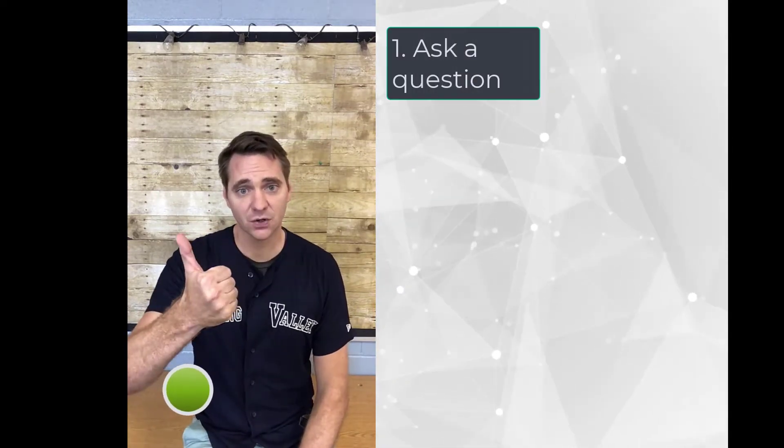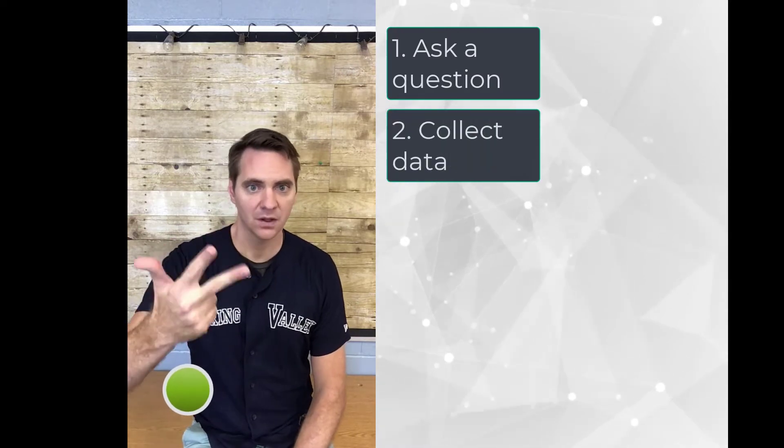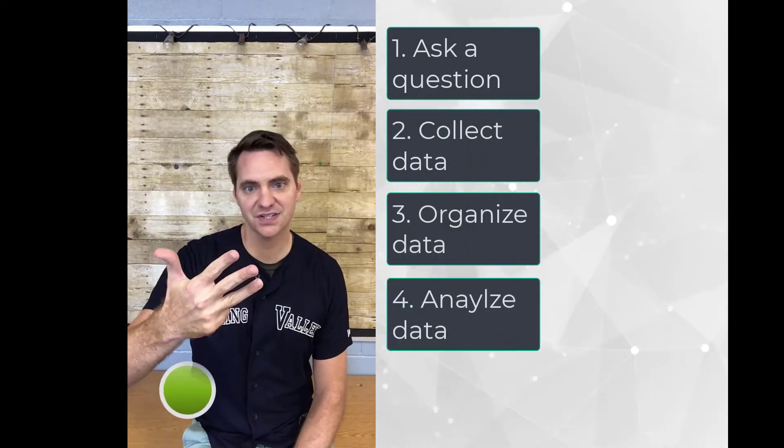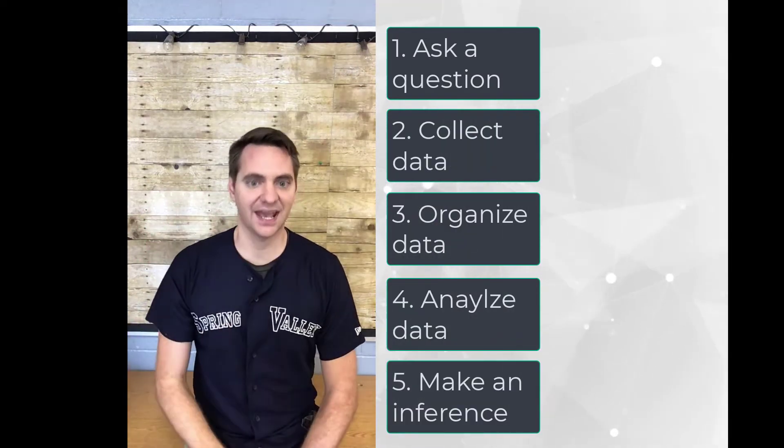All right, well, that was really wordy and dense. So, let's break this down into five simple steps to summarize the practice of statistics. They are: ask a question, collect data, organize it, analyze it, and make an inference to answer the question.